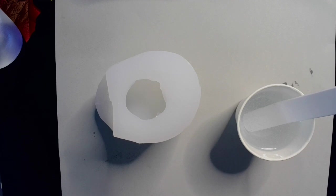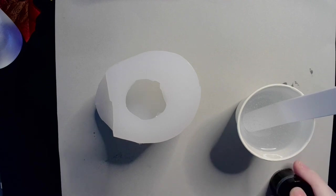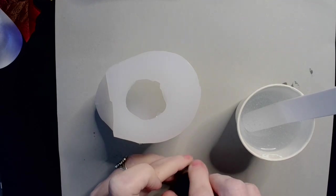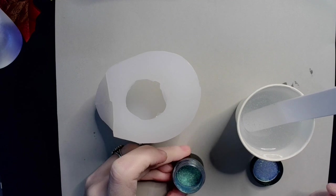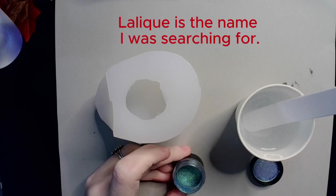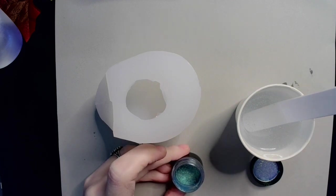And I am going to add some chameleon powder to it. Now, even though it is a matte mold, I still want to do that because I want that sort of chatoyant iridescence from within it.